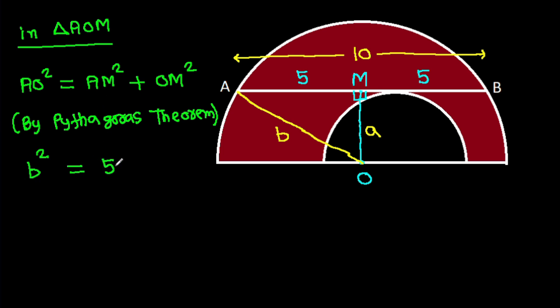AM is 5, so 5 squared, plus OM is a, so a squared. Therefore b squared minus a squared will be 25.